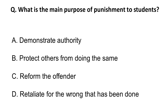The first question is: what is the main purpose of punishment to students? Option A is to demonstrate authority — that cannot be the purpose. Option B is to protect others from doing the same. Option C is to reform the offender. Option D is to retaliate for the wrong done — that cannot be correct either. Options B and C appear close, but the correct answer is to reform the offender, which is also what our judiciary says.